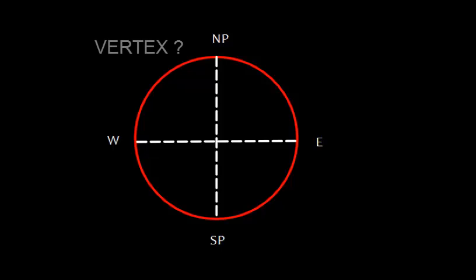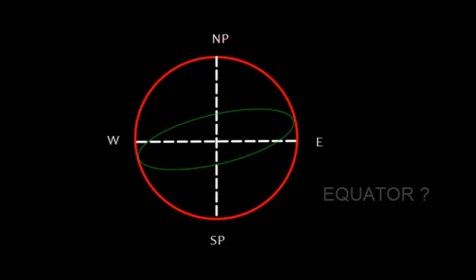In this video I am going to discuss the vertex of a great circle. Let us assume that this is Earth and Earth can be considered as spherical. This is the north pole and south pole, and this line can be assumed as the equator. Now suppose this is a great circle.